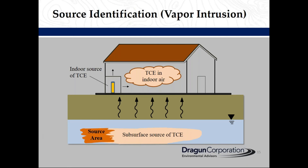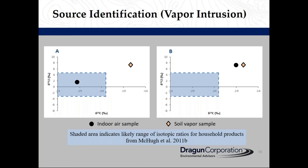Another application of CSIA is to identify the source of indoor air contamination — is the contaminated vapor from the subsurface or is there an indoor source? The shaded area on these plots indicates a likely range of isotopic ratios for household products reported by Macu and others. If we collect an indoor air sample and a soil vapor sample and the data distribution is similar to Plot A, there is strong evidence that an indoor source is the primary source. If data distribution is similar to Plot B, the subsurface source is the primary source of indoor air contamination.